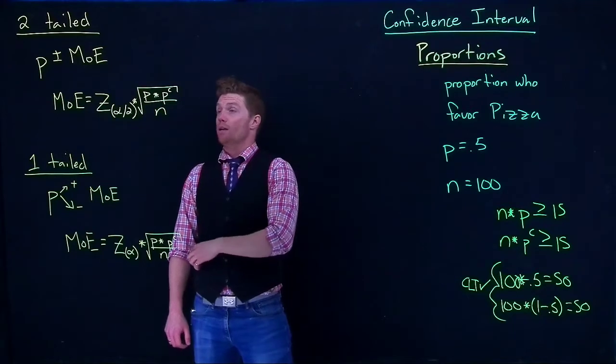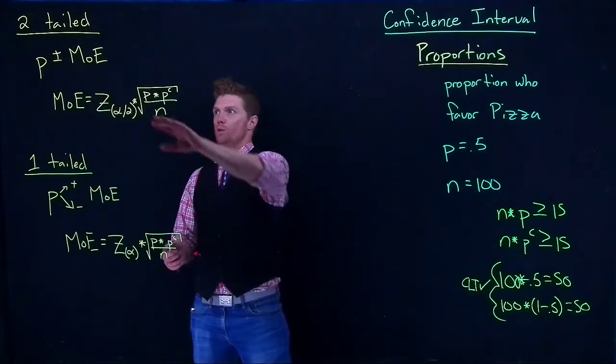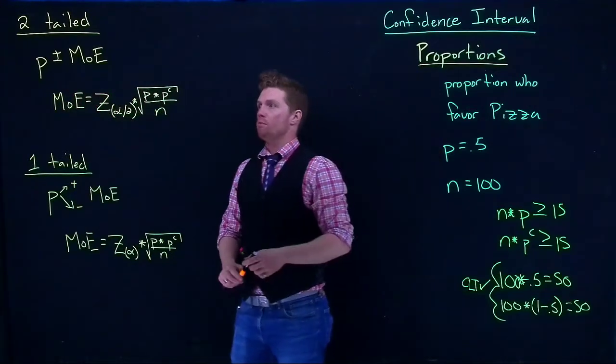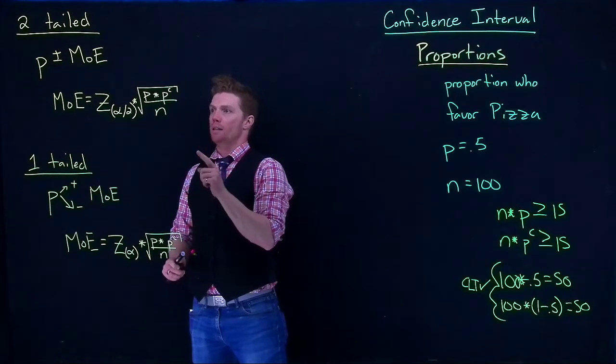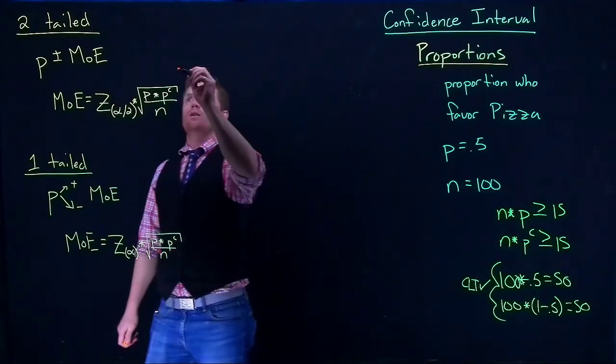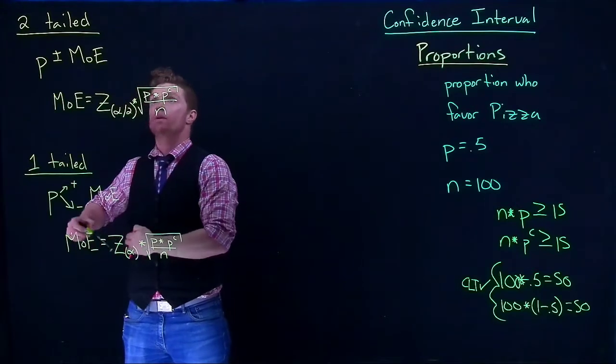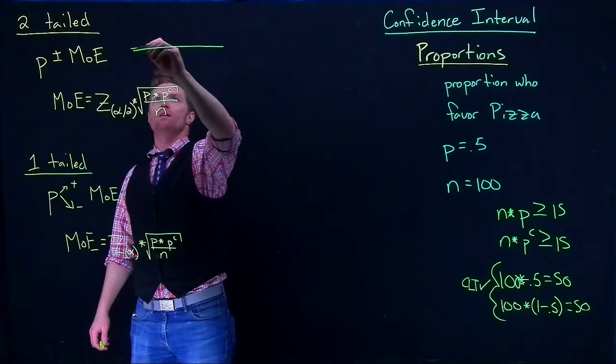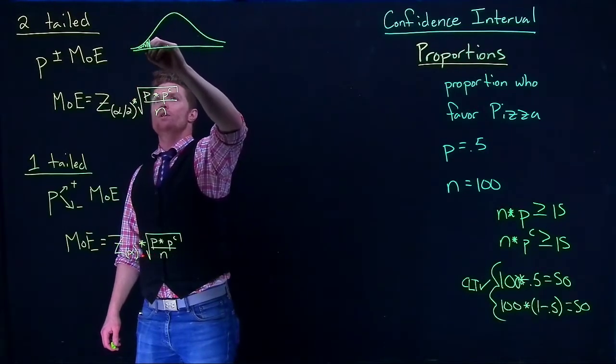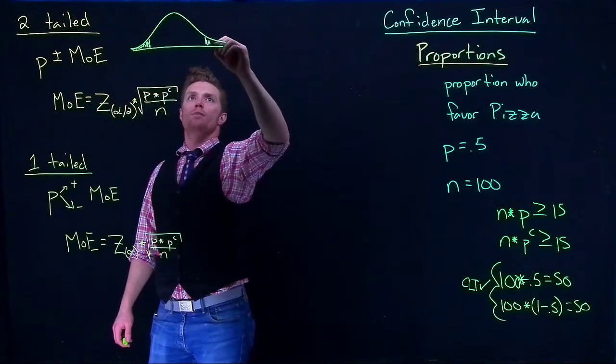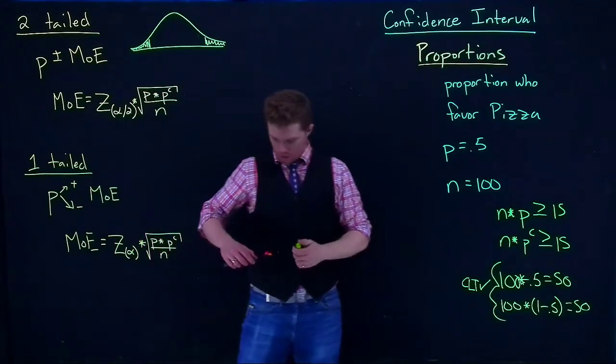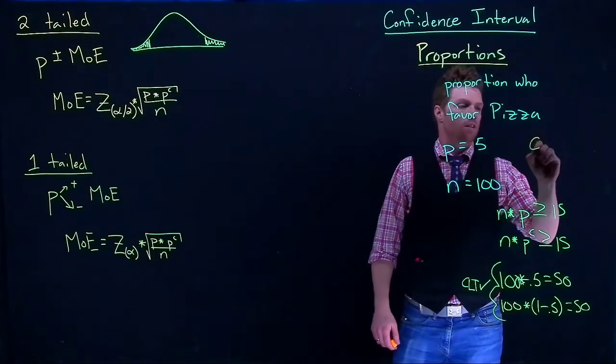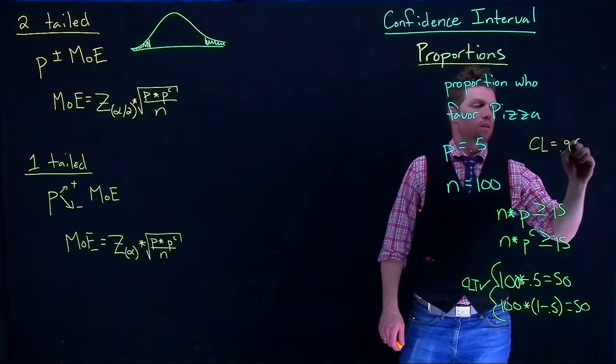Now that we have that underway, let's start off with our two-tailed example. We already have our sample proportion, that's 50%, so now we need to figure out our margin of error. Let's go ahead and put up a graphic. Our graphic is going to look something like this, and we want to put a little bit of our error up there and a little bit of our error over here. Let's say that we wanted to do a confidence level that was equal to 95.